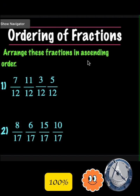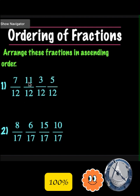Arrange this fraction in ascending order. Again, we start from the smallest fraction and move sequentially to the biggest fraction. The smallest fraction here is 3 over 12, followed by 5 over 12, then 7 over 12, and 11 over 12 becomes the biggest fraction.